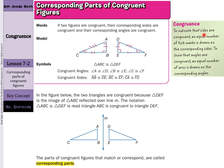To indicate that sides are congruent, an equal number of tick marks is shown on corresponding sides. So the one tick mark matches the one tick mark — AB is congruent to DE. To show that the angles are congruent, an equal number of arcs is drawn on the corresponding angles. So angle D with one arc is corresponding and congruent to angle A. Angle C with two arcs is congruent to angle F with two arcs. In the figure, the two triangles are congruent because triangle DEF is the image of triangle ABC reflected over line M. The notation triangle ABC is congruent to triangle DEF.